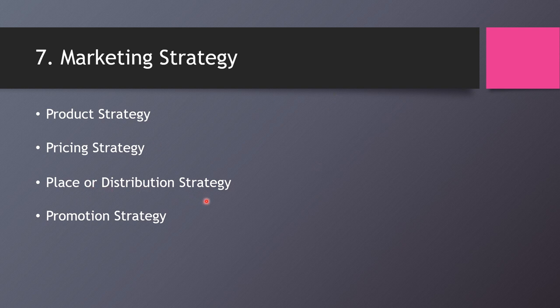The third P is place or distribution strategy — how you maximize the distribution of your product. You may sell on Facebook, Instagram, Shopee, Lazada, eBay, and Amazon, explaining why you chose those platforms. If you have a physical coffee shop at one location, explain why you chose that location and what makes it strategic. Define what 'strategic' means specifically, and show a location map in your report to justify why that spot is ideal.